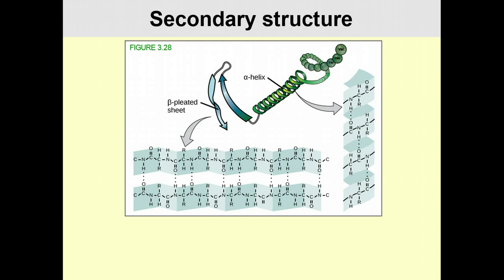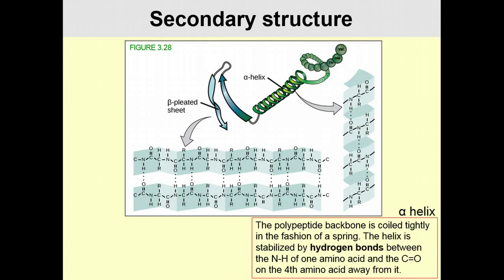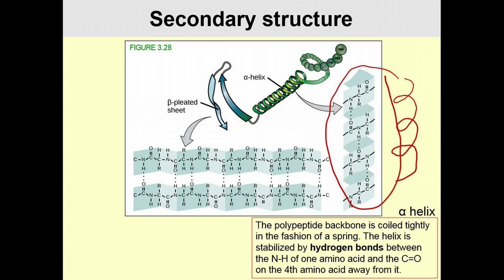Secondary structure is where three-dimensional shape begins. In the alpha helix, the polypeptide coils into a helical shape. The R groups are the functional groups, and the amino acids are linked by peptide bonds. There is a hydrogen bond between every fourth amino acid, producing the characteristic three-dimensional coiling.